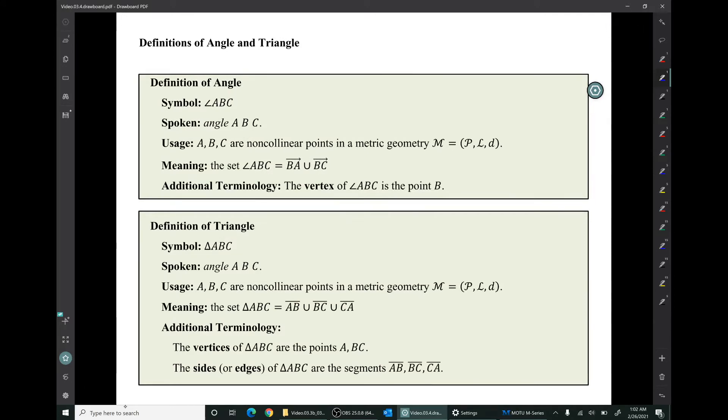Let's jump right in with the definition of angle and triangle. This symbol is spoken angle ABC. You can use this symbol when ABC are non-collinear points in a metric geometry. And what that symbol means is a set, the union of ray BA and ray BC. Some additional terminology: the vertex of this angle is the point B, whatever letter is in the middle of that symbol.